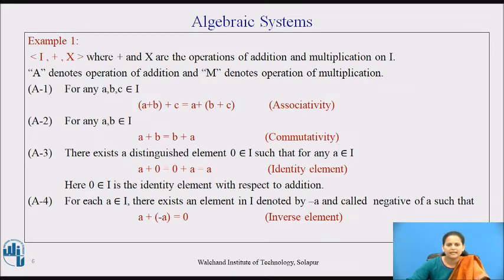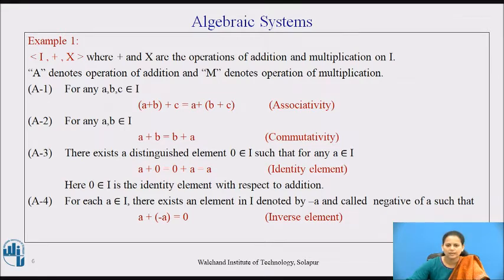A4: for each a belonging to I, there exists an element in I denoted by −a and called the negative of a, such that a + (−a) = 0, and it is known as the inverse element.